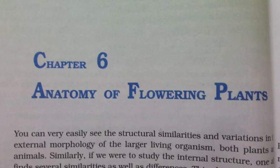6.1.1 Meristematic Tissues. Growth in plants is largely restricted to specialized regions of active cell division called meristems. Plants have different kinds of meristems. The meristems which occur at the tips of roots and shoots and produce primary tissues are called apical meristems. Root apical meristems occupy the tip of a root while the shoot apical meristems occupy the distal-most region of the stem axis. During the formation of leaves and elongation of stem, some cells left behind from shoot apical meristems constitute the axillary bud, capable of forming a branch or a flower.